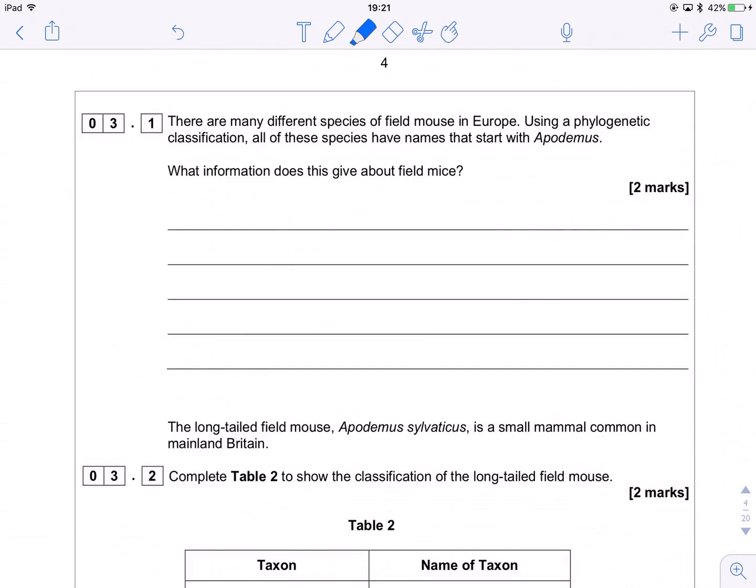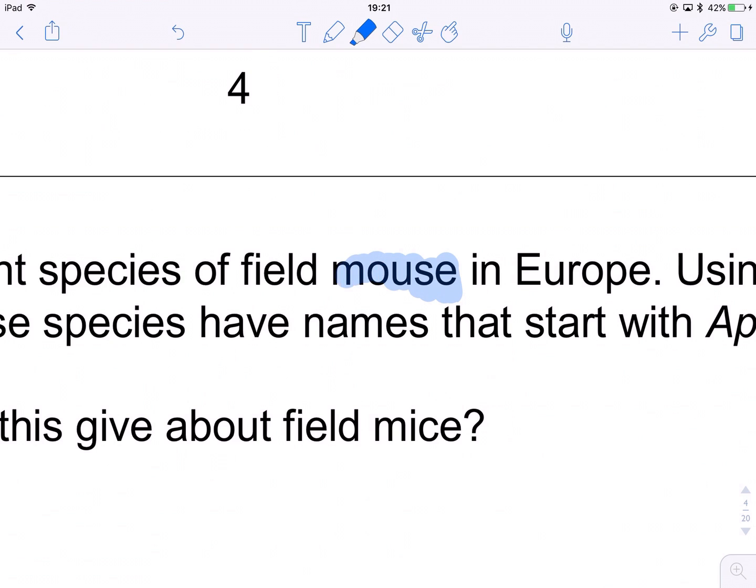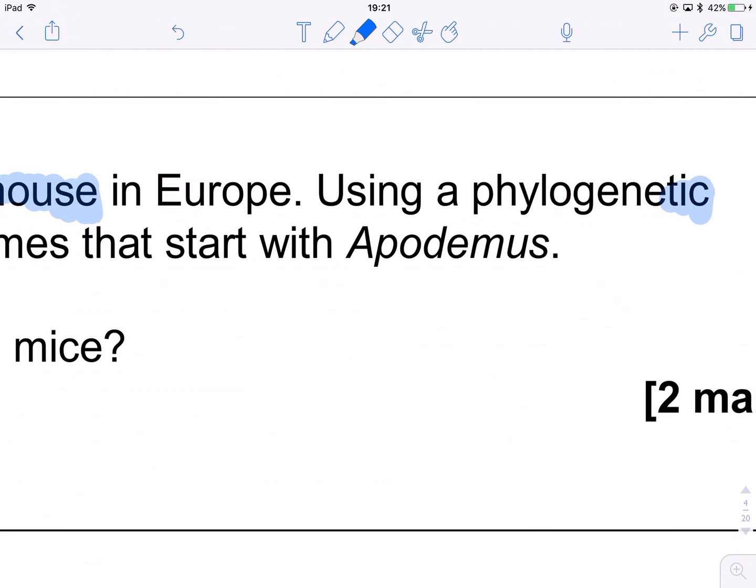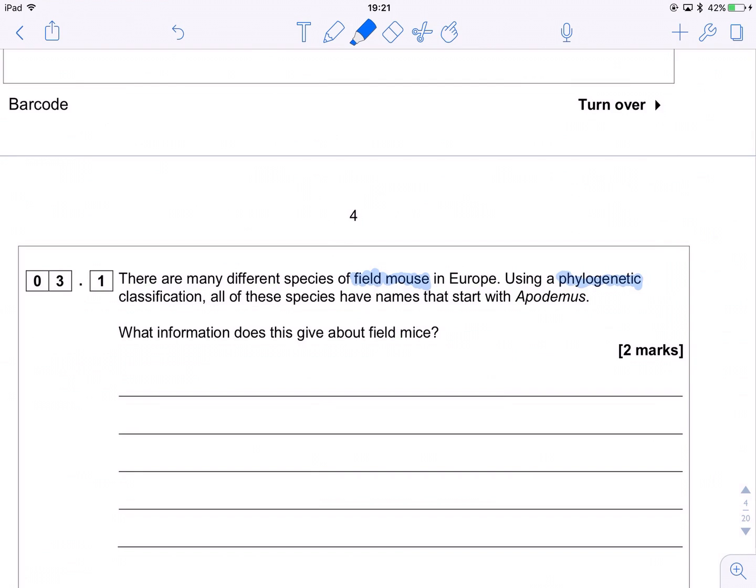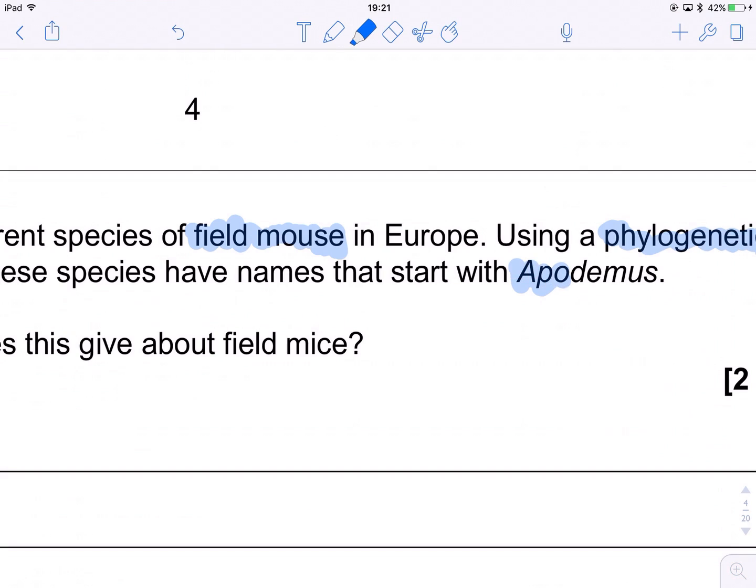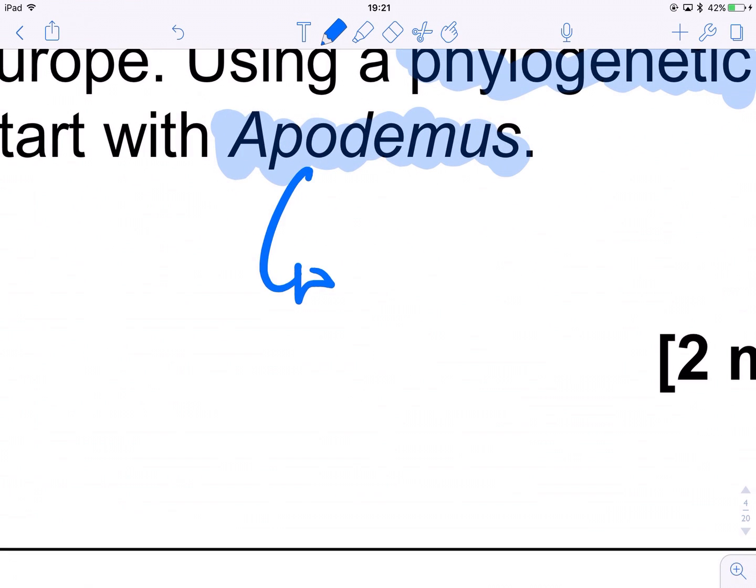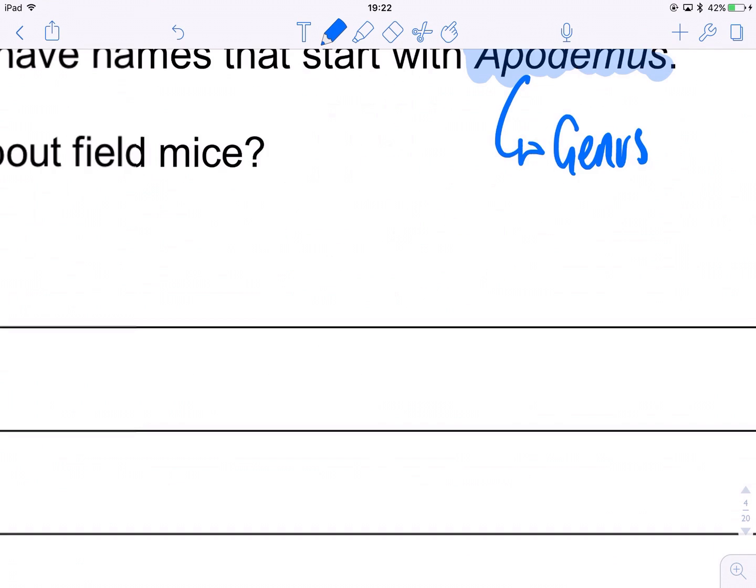So we say there are many different species of field mouse in Europe. Field mouse, okay, dealing with rodents. Using a phylogenetic classification, all of these species have names that start with Apodemus. Not sure how that's supposed to be pronounced, but I'm sure someone will correct me in the comments. So it's saying what does that information give us about the field mice in general. So if they all start with Apodemus, then this means that this here is the genus, which means they're all from that same genus.